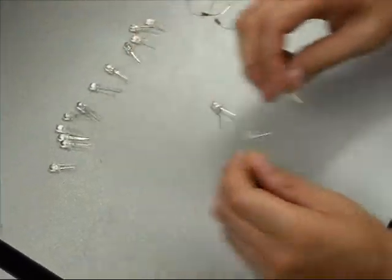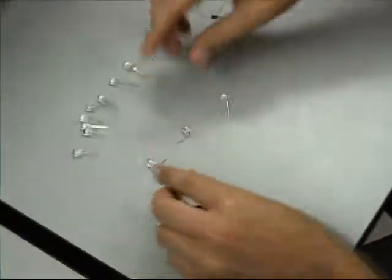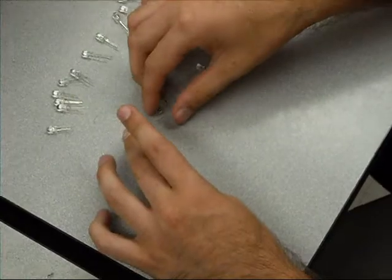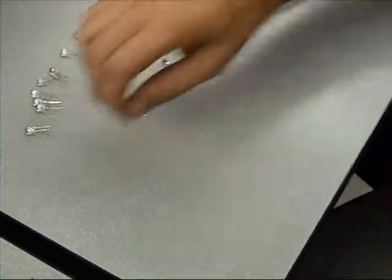Now we're soldering three LEDs in series with one another. We're going to have five of these branches and all those branches are going to be soldered together in parallel. Each branch is going to have a 100 ohm resistor.